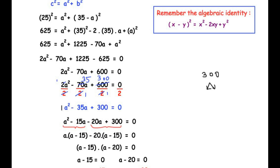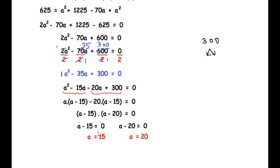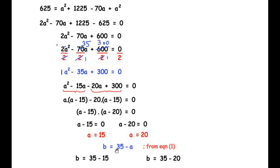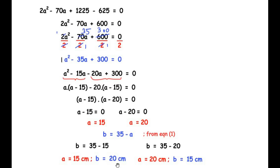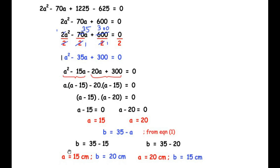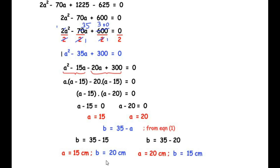Setting each factor equal to zero: a − 15 = 0 gives a = 15, and a − 20 = 0 gives a = 20. Now finding b using Equation 1 (b = 35 − a): when a = 15, b = 35 − 15 = 20; when a = 20, b = 35 − 20 = 15. So the two sides of the right-angled triangle are 15 cm and 20 cm.